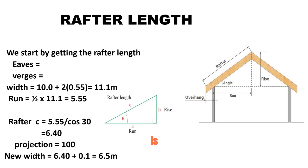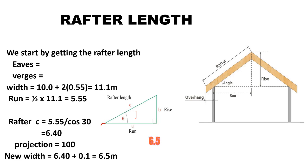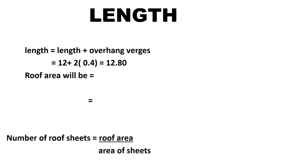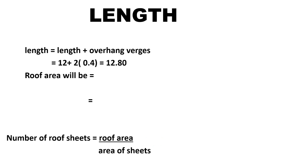Using a 30-degree angle, we extract the rafter length. This is 30 degrees here, and we have the run, and we are going to find the rafter length C, which is 6.40 meters. Then we add a projection here of 100 millimeters, so our new rafter half-width will be 6.40 plus 0.1, giving us 6.5 meters. The length will be the length of the house plus the overhangs — the verges extending on the length side — that is 12 plus 2 times 0.4, giving us 12.80 meters.